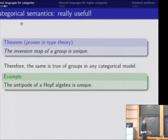In particular, for a Hopf algebra, the inversion map is called an antipode. And if you actually sit down and try to prove by working with the elements of a Hopf algebra that the antipode is unique, it's kind of tricky. I mean, you can do it, but it's a lot easier to just quote a general theorem about group objects in arbitrary categories.